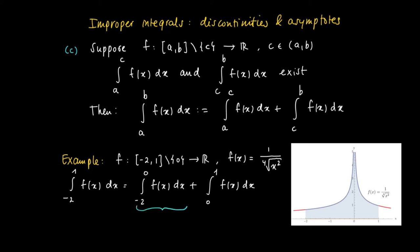Well, it can be shown, and you have to try it yourself, that the integral from -2 to 0 equals 2 square root of 2, and that the integral from 0 to 1 f(x) dx equals 2. So actually both sides, the areas, can be computed and can be added, so that the integral from -2 to 1 f(x) dx becomes 2 times 1 plus square root of 2.